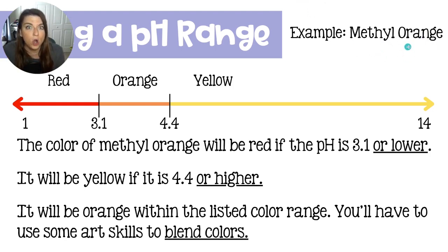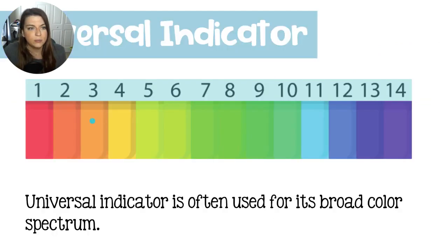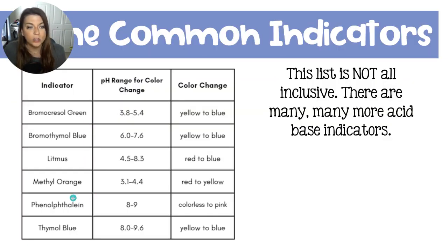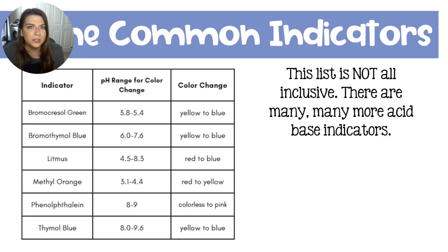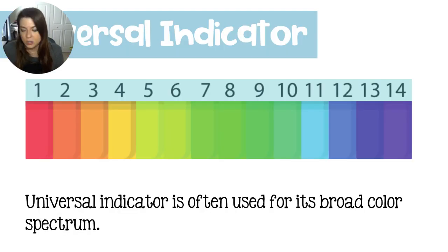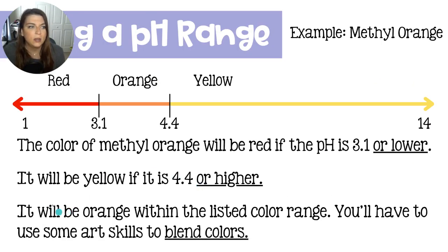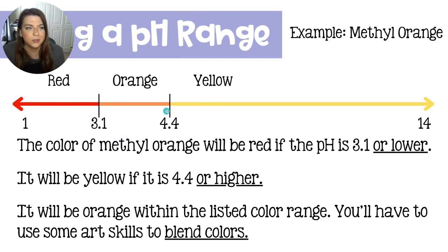Using a pH range isn't that tough. If we're looking at the example of methyl orange and going back to the table, methyl orange is right here. It says from 3.1 to 4.4 it will be red to yellow — that's the color change. I always do it as an arrow and just place the two values on top of that arrow. Looking at the pH scale, which runs from 1 to 14, and placing the numbers on top of the colors, this is what we get.